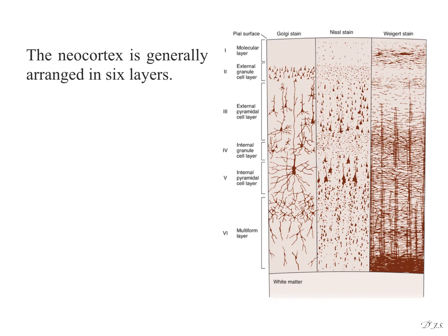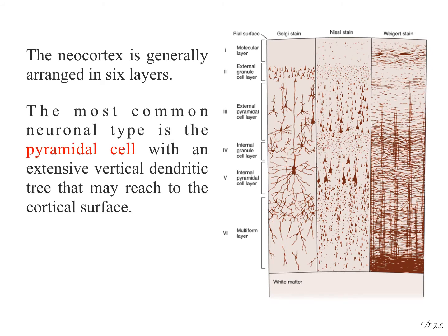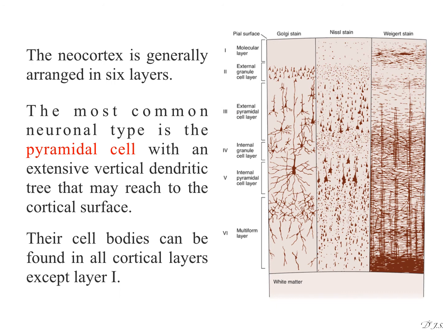There is a brief description of cerebral cortex layers. The neocortex is generally arranged in 6 layers. The most common neuronal type is the pyramidal cell with an extensive vertical dendritic tree that may reach to the cortical surface. Their cell bodies can be found in all cortical layers except layer first.